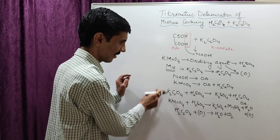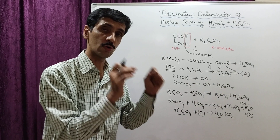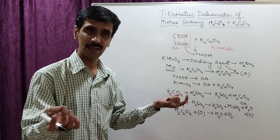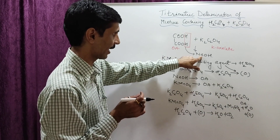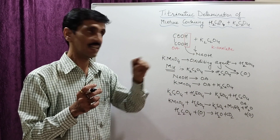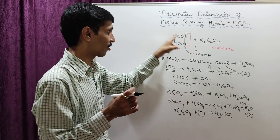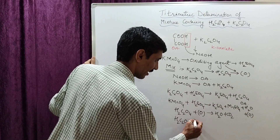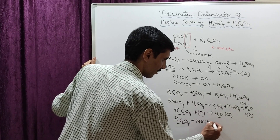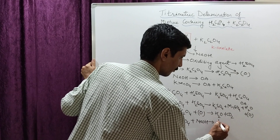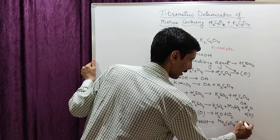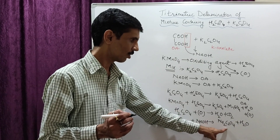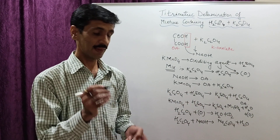The reaction with NaOH is straightforward. When carrying out the NaOH titration, only the H+ ions of oxalic acid react. So the reaction is between H2C2O4 originally present in the mixture and NaOH, resulting in the formation of sodium oxalate, Na2C2O4, plus H2O. It is a simple acid-base reaction where acid and base react to give salt and water.